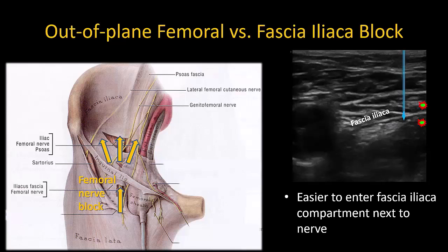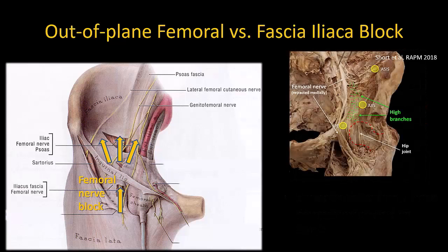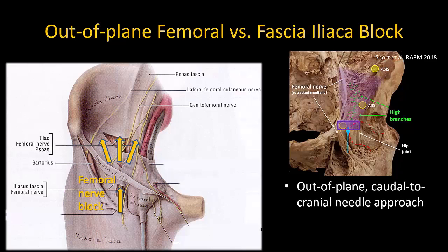The critical element of the fascia iliaca block that I retain, however, is to use an out-of-plane approach so that I am injecting in a cranial direction, thus promoting spread to the proximal articular branches of the femoral nerve that supply the hip joint, and hopefully also to the lateral femoral cutaneous and obturator nerves. Similarly, I will also use a larger volume of 30 to 40 milliliters, as long as the maximum recommended dose of local anesthetic is not exceeded.